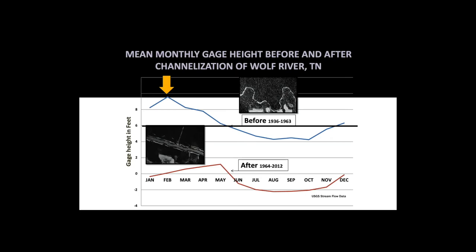Not only did the extent and severity of the disturbance change, but so did the seasonality and intensity. The peak river flow was back in February but is now peak in May, when trees are actually starting to leaf out, rather than in February when trees are dormant. Moreover, the Wolf River became incised. And another bit of irony: the channelization of the river itself is an anthropogenic disturbance — one that prevented a natural disturbance regime, which opened the way for the invasion of Chinese privet, a biological disturbance made possible by the anthropogenic disturbance of river channelization.